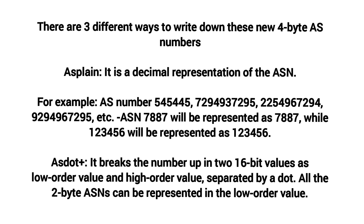The first notation is AS Plain, which is a decimal representation of the ASN. For example, ASN 7887 will be represented as 7887, while 123456 will be represented as 123456.